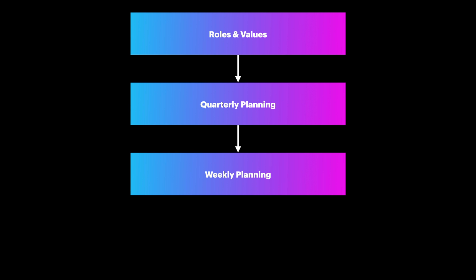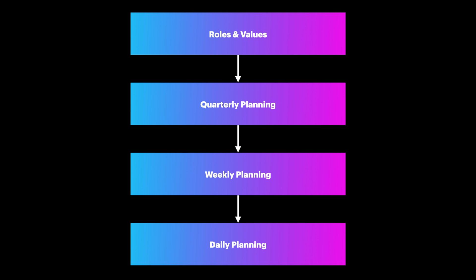Once you get clear on that, you can start planning using different timescales. Cal recommends quarterly, weekly, and daily planning, which I think is a pretty good cadence. I personally don't do annual plans because I think that's too long and it's impossible to get that right, so I do planning on a quarterly basis and then re-evaluate every 90 days. In my opinion, that's the sweet spot because a quarter is long enough to make some significant progress, but it's short enough that you have built-in periods where you can reset and make the necessary adjustments.